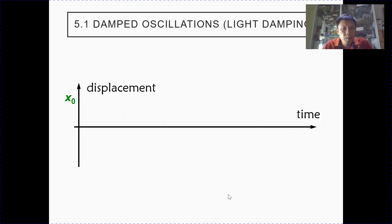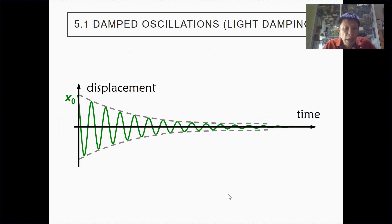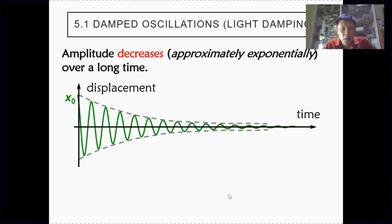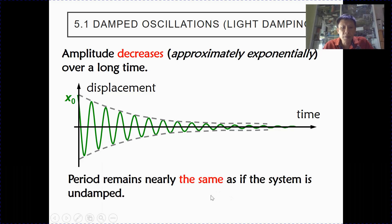For light damping, the amplitude will decrease with time because energy is lost. The amplitude will decrease over a long time. If you look at the dotted line in this graph, you will see that amplitude decreases approximately exponentially. Note that the period of oscillation remains nearly the same as if the system is undamped.